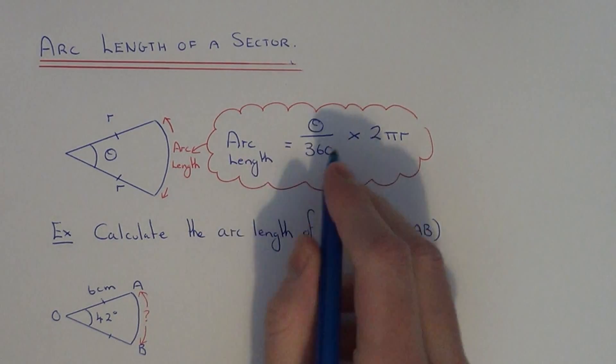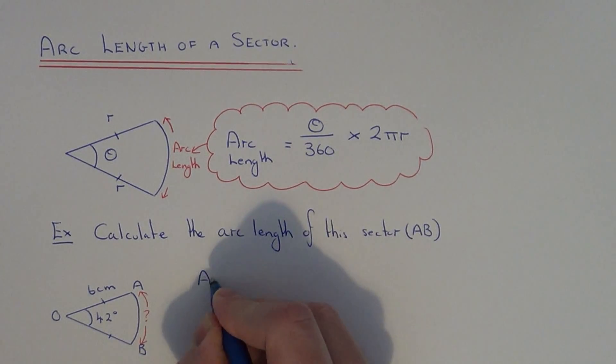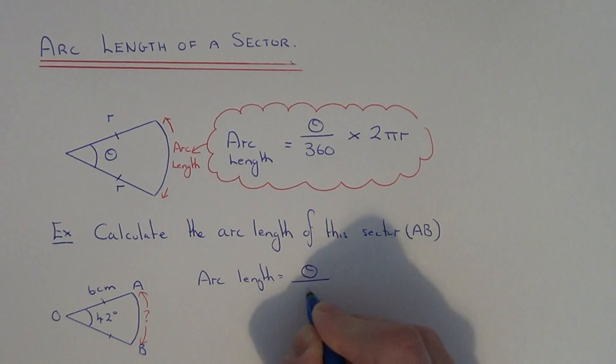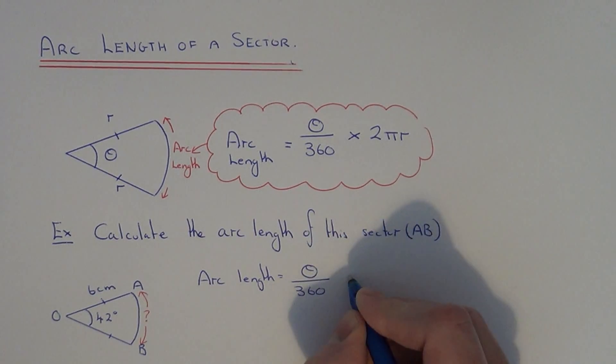So we can use the formula above, so let me just copy it out one more time. The arc length is theta, theta is the angle, divided by 360 times 2 times π times r.